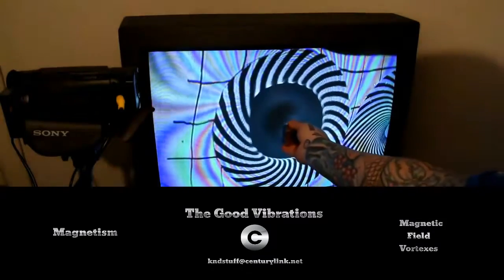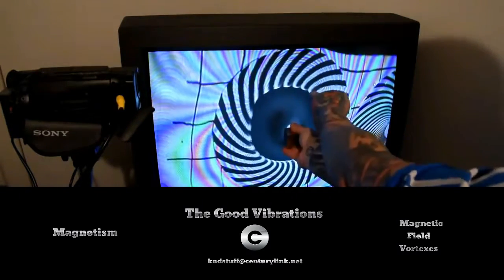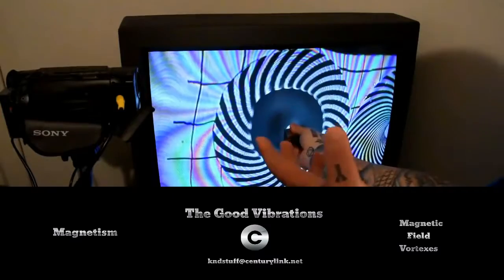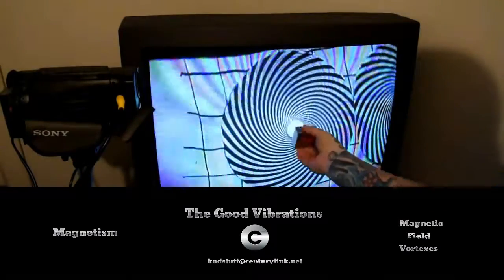And here a magnet, you're showing a north side towards a TV screen, you'll see the north side vortexes it in a particular direction, to the right. When you flip the magnet around, the south side vortexes it the opposite direction, to the left.